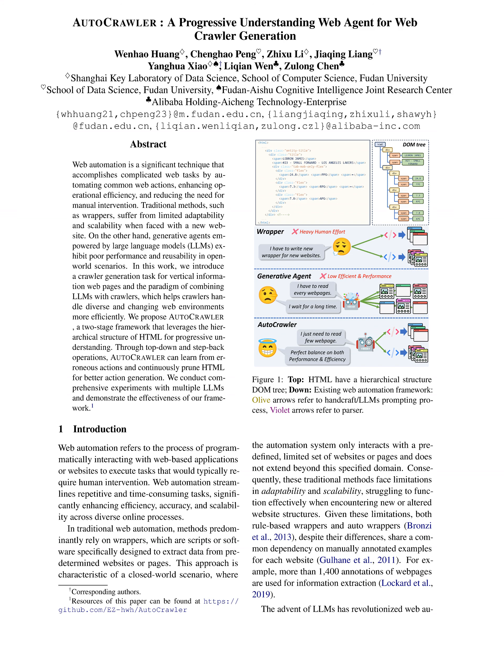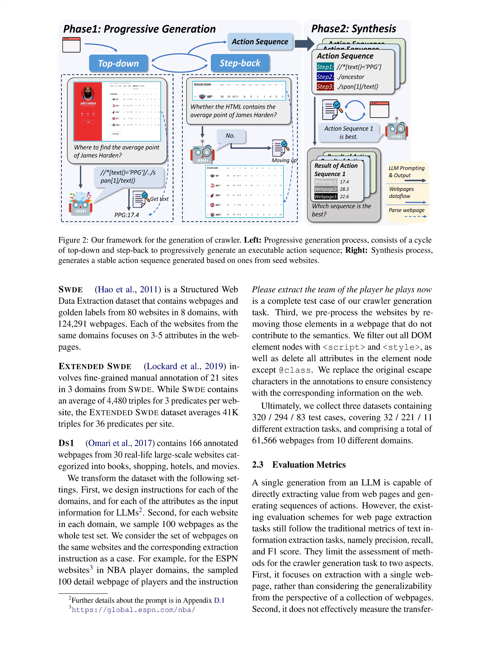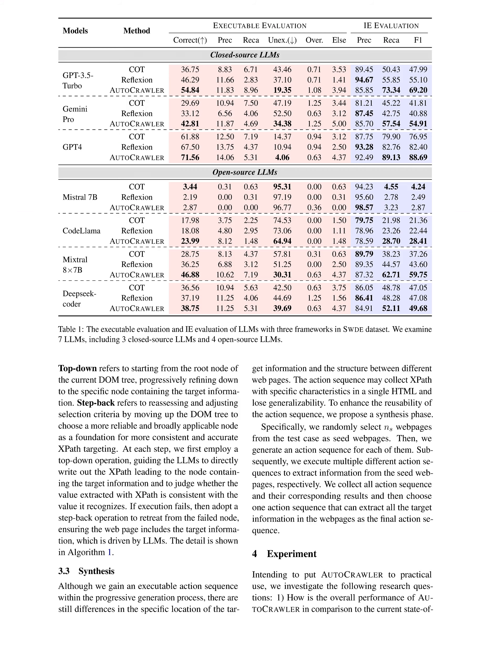Three datasets — SWDE, Extended SWDE, and DS1 — are utilized for testing the framework. The evaluation metrics include precision, recall, and macro F1, calculated as the mean of the corresponding metrics for each case. Additionally, the performance of AUTOCRAWLER is assessed based on the executability of action sequences, categorized into six situations such as correct and unexecutable, to measure the success rate and transferability of the generated execution paths.